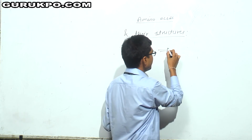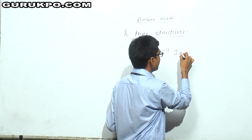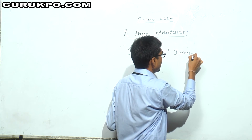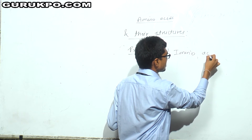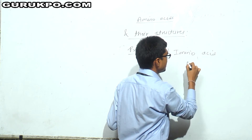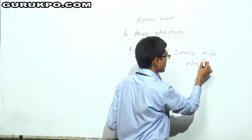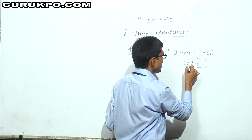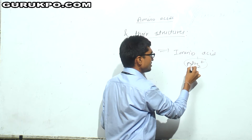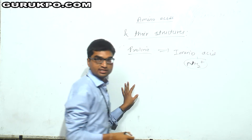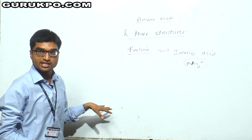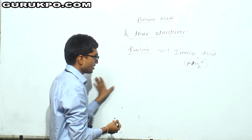Proline is an amino acid — it is an imino acid, meaning it has an NH2⁺ group. The structure of proline will be in a cyclic ring and can be easily formed.